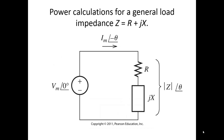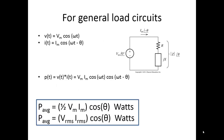Before we move on, let's come up with some general equations for a general load. We have combined our resistors, inductors, and capacitors into a single equivalent impedance. We can write that as R plus jX, or alternatively in phasor form as the magnitude of Z with an angle of theta. Deriving the equations for power using our standard equations for voltage and current, the most important results are: the average power is one-half times the peak voltage times the peak current times the cosine of theta, or equivalently, the RMS voltage times the RMS current times the cosine of theta.